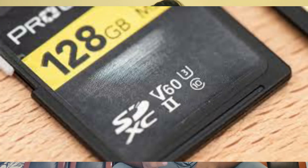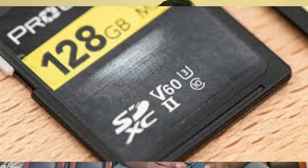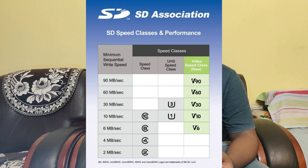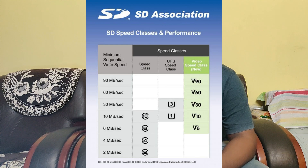Friends, if you see a V followed by a number on the memory card, that indicates the video class speed for writing video. The video class ratings are V6, V10, V30, V60, and V90. V90 offers 90 Mbps write speed. V60 and V90 are suitable for SLR and DSLR cameras.